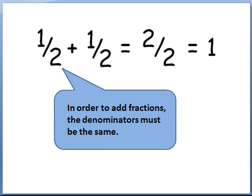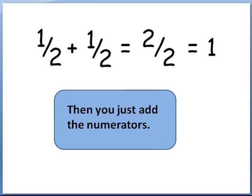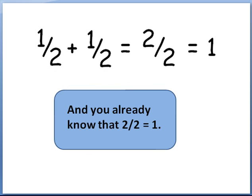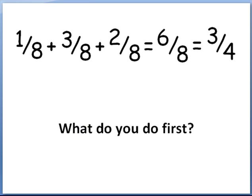In order to add fractions, the denominators must be the same, and you produce a denominator that stays the same. In other words, 2 plus 2 is not 4 in this case — a denominator of 2 and a denominator of 2 remains a denominator of 2. You simply add the numerators: 1 plus 1 is 2, and the denominators stay the same. You do not add them.